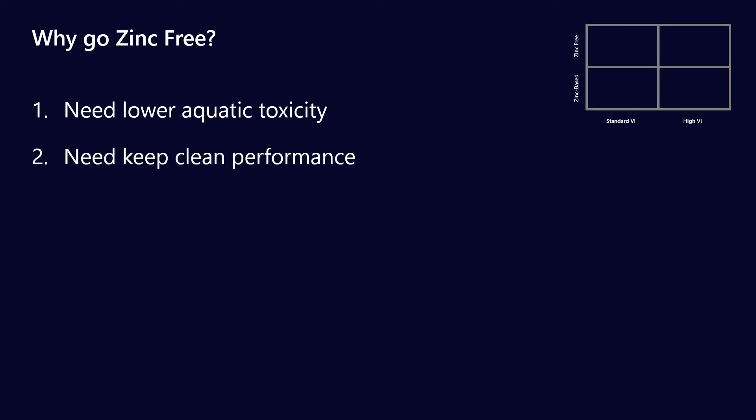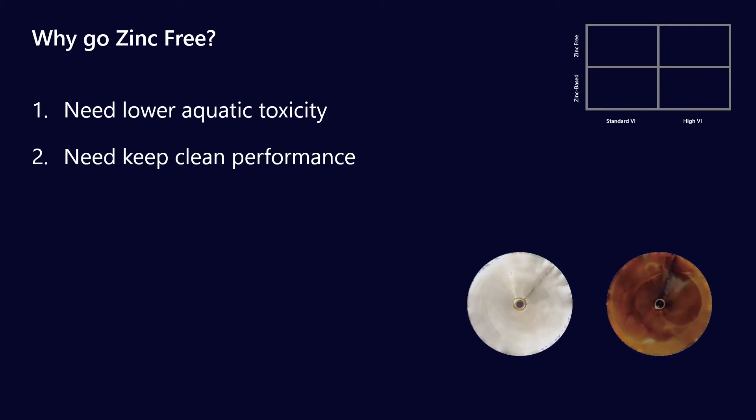Zinc free also helps you with keep clean performance. So one thing that's probably worth noting is that sludge in hydraulic systems is the most common component of that sludge is actually broken down ZDDP additive. So after it's performed its function it goes to sludge quite easily. So having a zinc free formulation really helps you with keep clean performance. Now the detergent is also going to do some of that work but not having zinc in the initial formulation is really going to assist the lubricant in maintaining that clean performance.